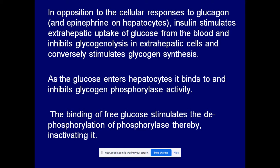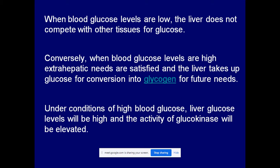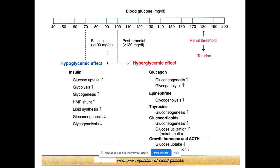In opposition to the cellular responses to glucagon and epinephrine on liver cells, insulin stimulates extra-hepatic uptake of glucose from the blood and inhibits glycogenolysis in extra-hepatic cells, while conversely stimulating glycogen synthesis. Excess glucose is thus diverted for the synthesis of glycogen by the action of insulin. These two hormones act antagonistically to each other and together maintain blood glucose concentration at the normal level.